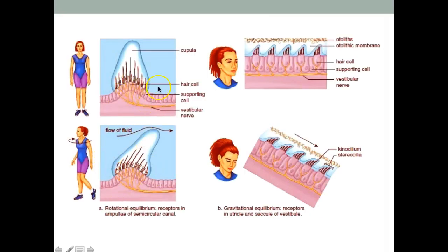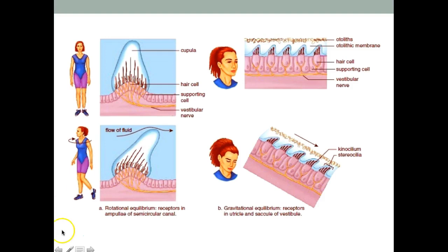Here you can see the crista ampullaris — when you're standing straight and then rotating or bending your head, the way these hair cells move informs your brain of where your head is in space. If you've ever been on a roller coaster and closed your eyes, you still have a good idea of when you're upside down or turned sideways — that's because of these crista ampullaris, the hair cells in your inner ear informing your brain of where your head is in space. That's it for the ear.